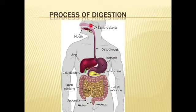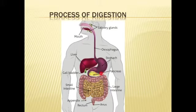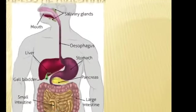Here is the salivary glands, and here is the esophagus, and here is the liver and gallbladder, the pancreas, the stomach, the large intestine, the small intestine, the appendix, the rectum, and the anus.